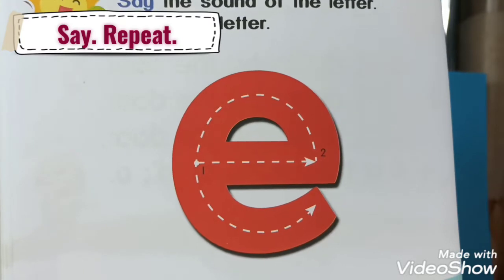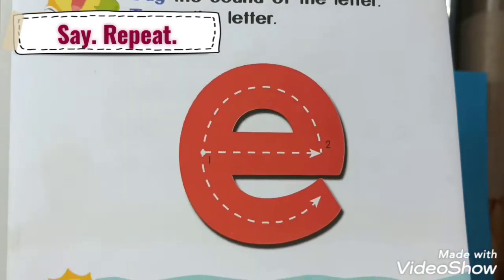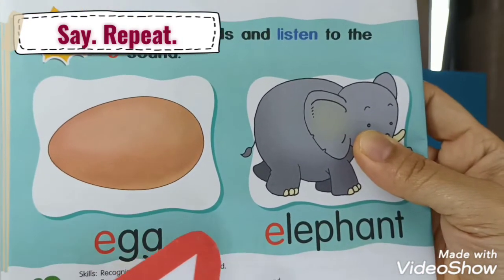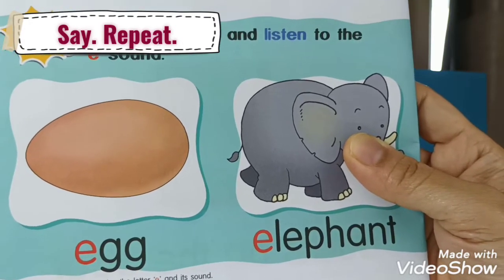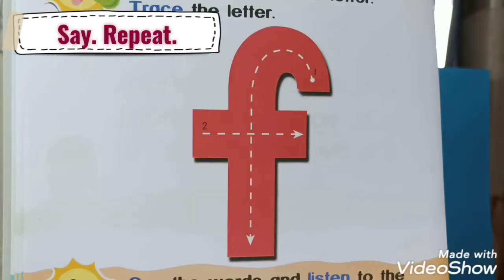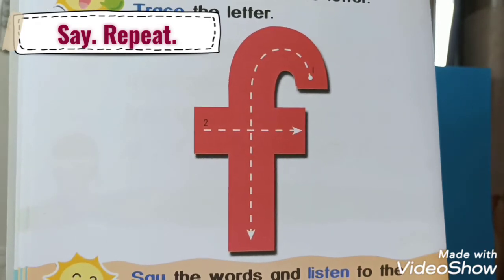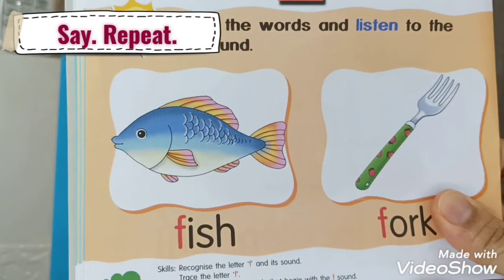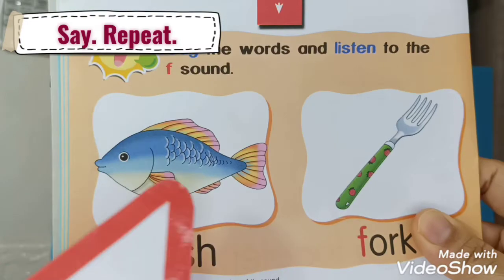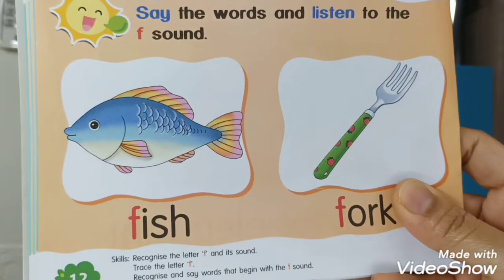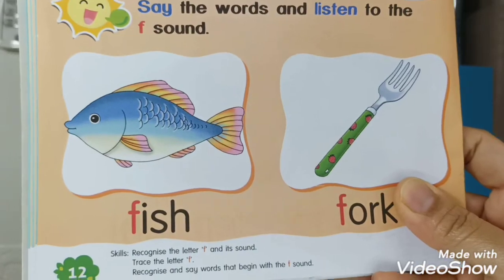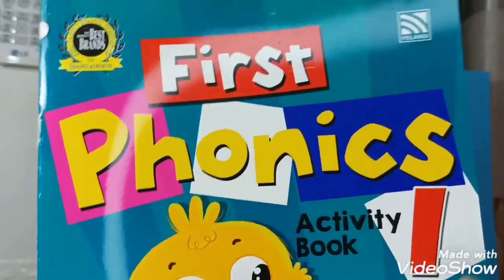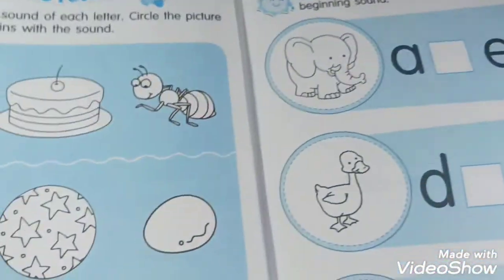Letter E — eh, eh, eng. A, A, A, A, A — Elephant. A, A — Elephant. Letter F — F, F — Fish. F — Fish. F — Fork. F — Fork. Yeah, that's a fork!